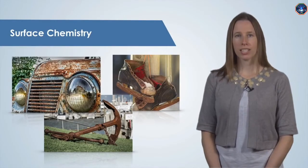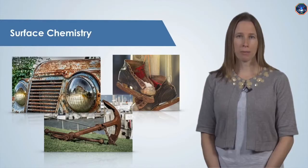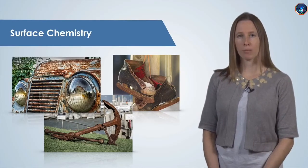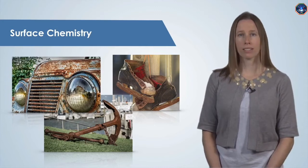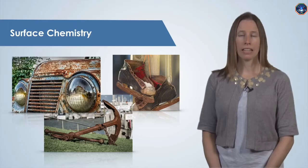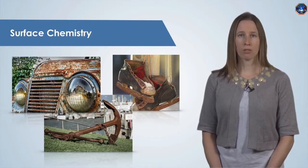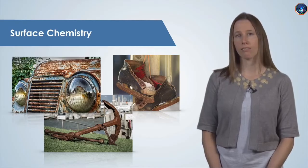If you've ever seen rust, you've seen evidence of surface chemistry. When iron is exposed to the atmosphere, the surface iron atoms will react with water and oxygen to form iron oxide, or rust. Often, the surface of a material is very different from the bulk. Steel is a very strong, durable material, but the rust that forms on its surface breaks very easily.